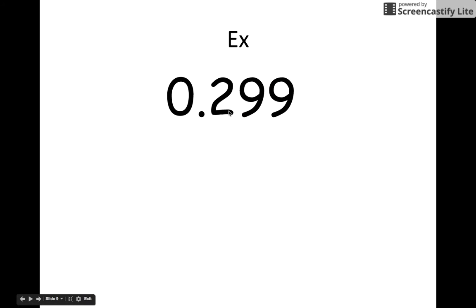We have 0.299. So the number after the decimal point is 2, which is smaller than 5, so we round it down, and it becomes 0.